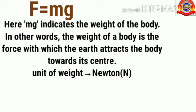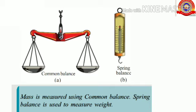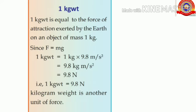Here, mg indicates the weight of the body. In other words, the weight of a body is the force with which the earth attracts the body towards its center, and the unit of weight is Newton. Mass is measured using a common balance, while a spring balance is used to measure weight. One kilogram weight equals the force of attraction exerted by the earth on an object of mass one kilogram: F = mg = 1 kg × 9.8 m/s² = 9.8 N. So, 1 kilogram weight equals 9.8 Newton.